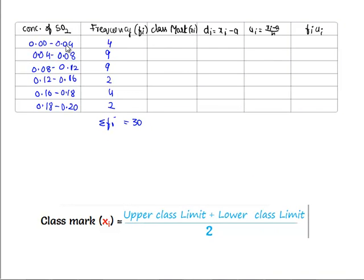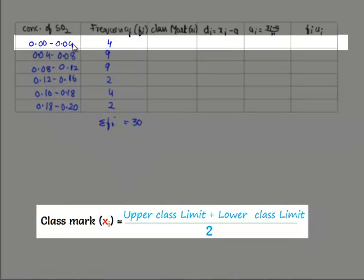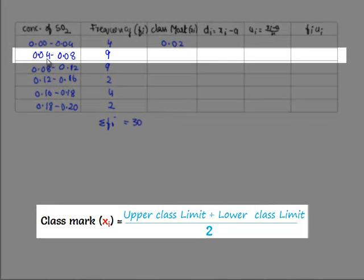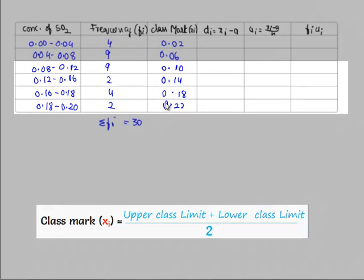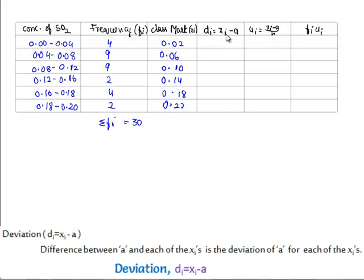Class mark is the midpoint of the upper limit and lower limit. Hence for 0.00 to 0.04, we get the class mark xi = 0.02. That is (0.00 + 0.04)/2. And for (0.04 + 0.08)/2, we get 0.06. And similarly we get the remaining values: 0.10, 0.14, 0.18, and 0.22.